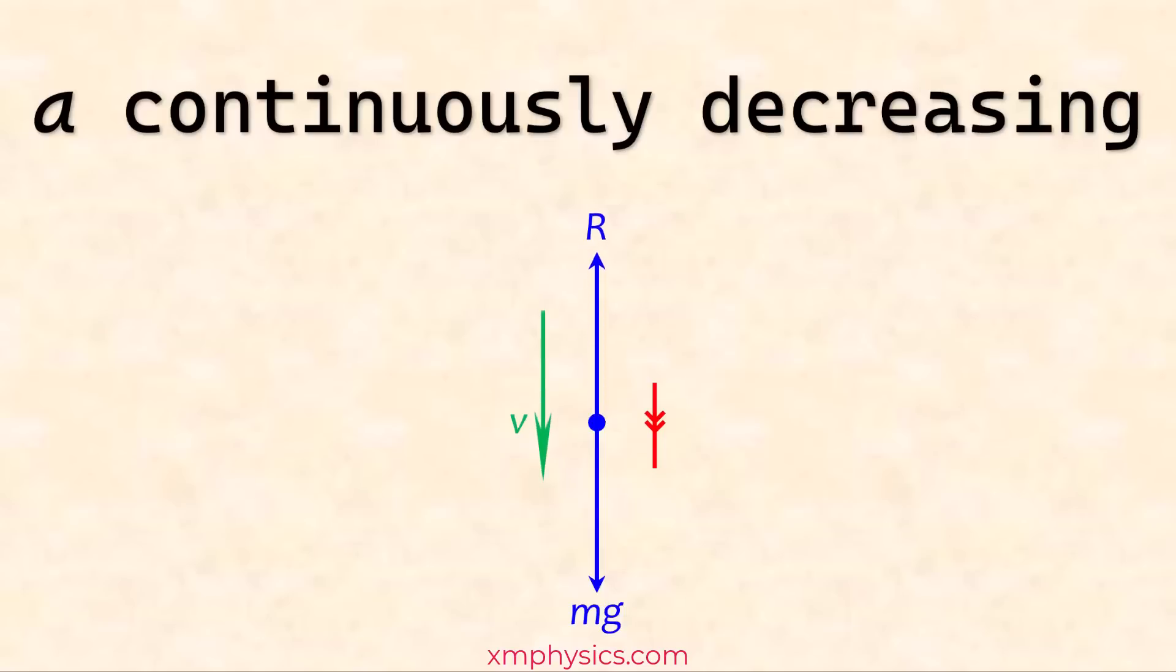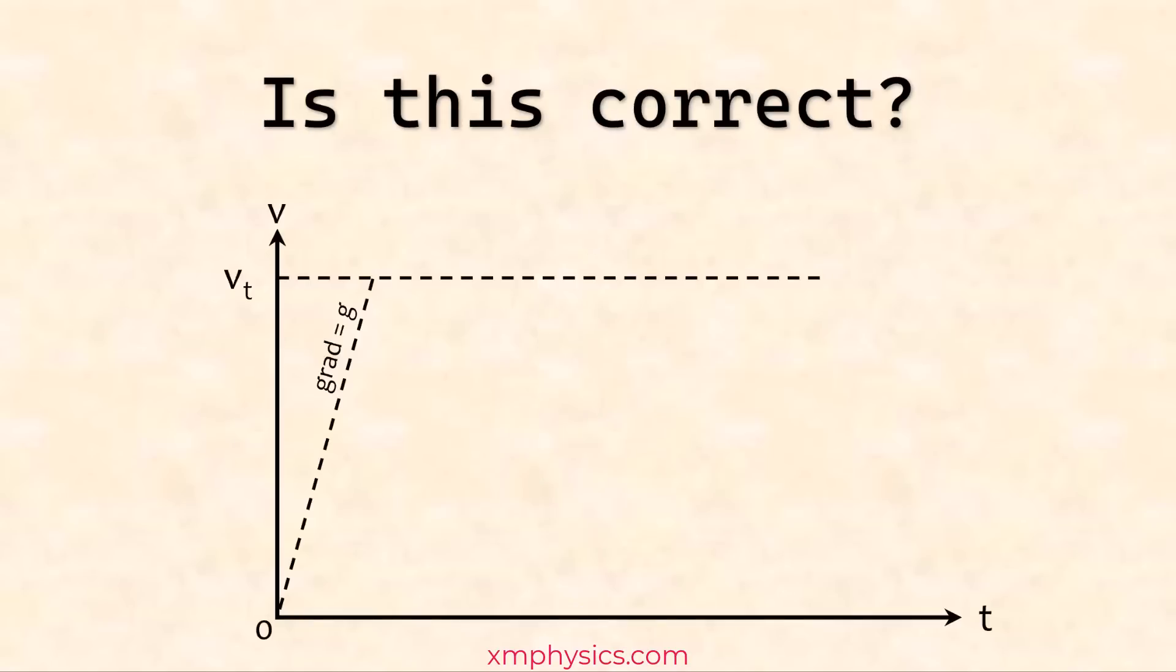And therefore, the acceleration gets smaller and smaller. All this happened continuously, right? Continuously. There should be no abrupt jump in the acceleration, meaning it should be a curve, not a straight line segment.